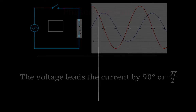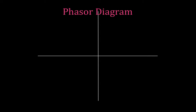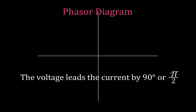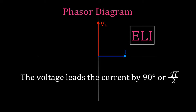We can represent that phase difference with a phasor diagram, which is a graphical representation. We use ELI to remember that the voltage leads the current. We plot the maximum current vector on the positive X axis and the voltage across the inductor on the positive Y axis. There is a 90-degree angle between those two, which represents the fact that the voltage leads the current by 90 degrees, or pi over two radians.